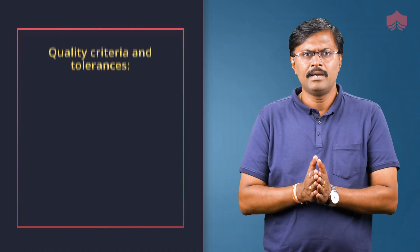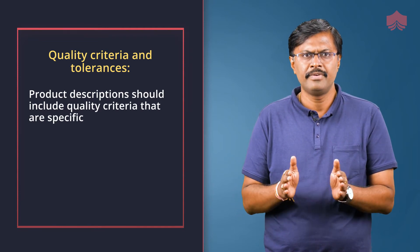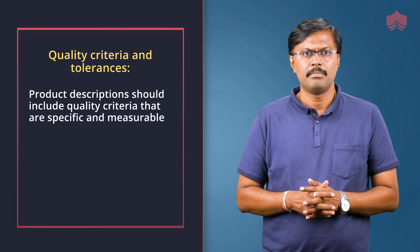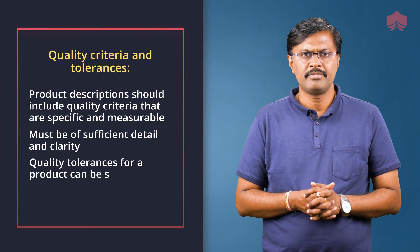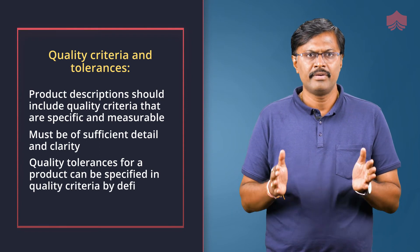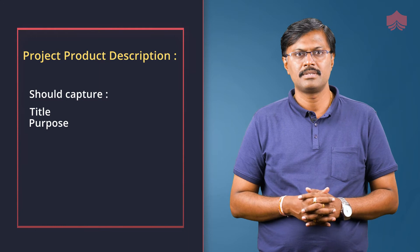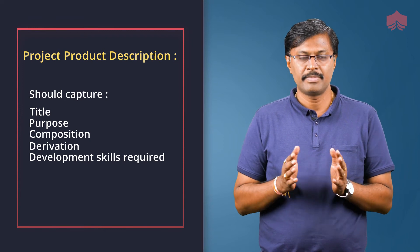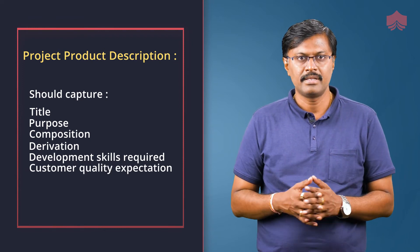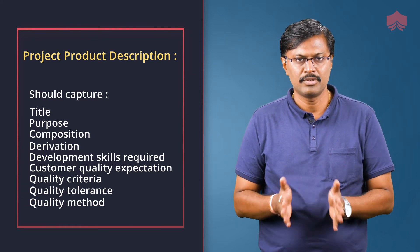Quality criteria and tolerances: product description should include quality criteria that are specific and measurable, and must be of sufficient detail and clarity. Quality tolerances for a product can be specified in quality criteria by defining an acceptable range of values. The project product description should capture: title of the product, purpose, composition, derivation, development skills required, customer quality expectations, acceptance criteria, project level quality tolerance, acceptance method, and acceptance responsibilities.